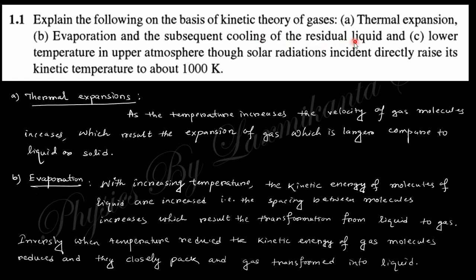Third, the lower temperature in the upper atmosphere, where solar radiation incident regularly raises the kinetic temperature to about 1000 Kelvin. For thermal expansion: when temperature increases, the kinetic energy of gas molecules increases. The molecules want to expand outward, which is why a body or gaseous medium expands — gases expand more compared to liquids and solids.